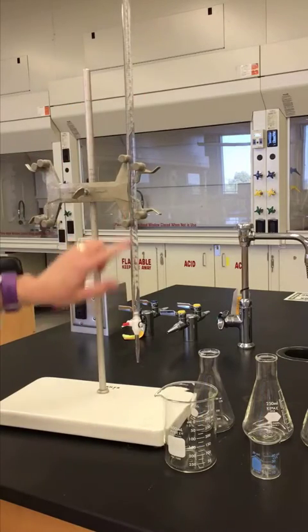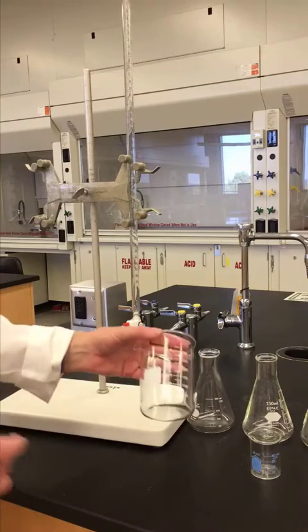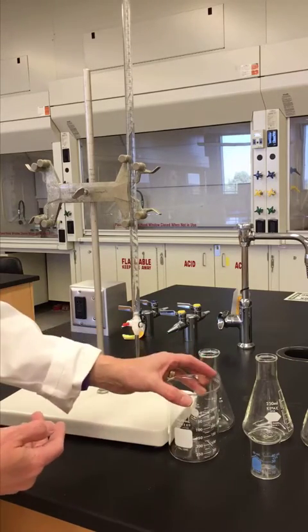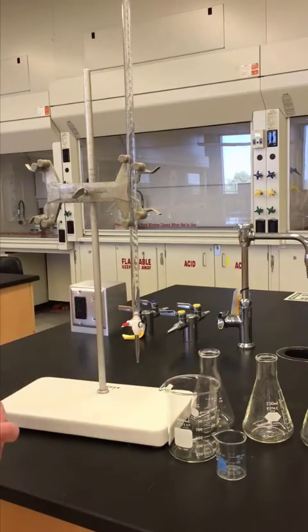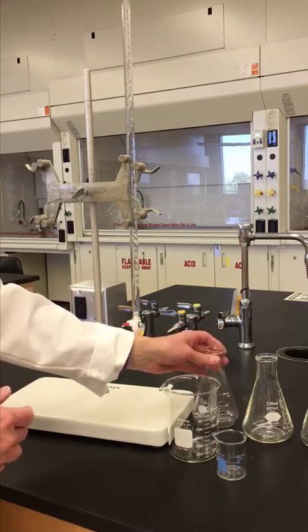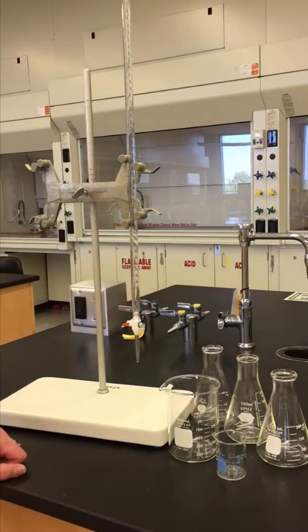We'll look at the burette a little bit closer in a bit. The other equipment that you need will be a large beaker for waste, a smaller beaker to put our base in, and we're going to need three Erlenmeyer flasks for trials one, two, and three.